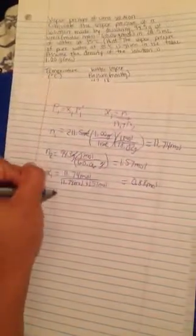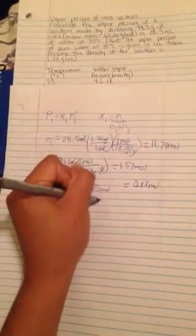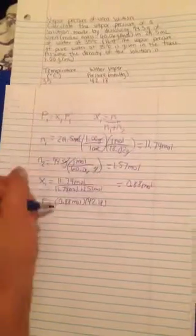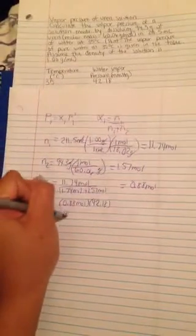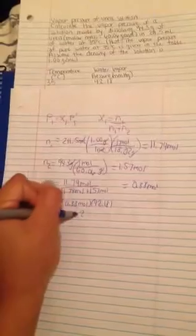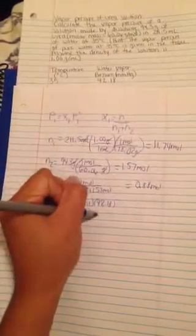Once we have that we just plug it into our P1 equation, 0.88 mole, and here they tell us that it's 42.18 which is the vapor pressure of water and we get 37.12 mmHg and that's our answer.